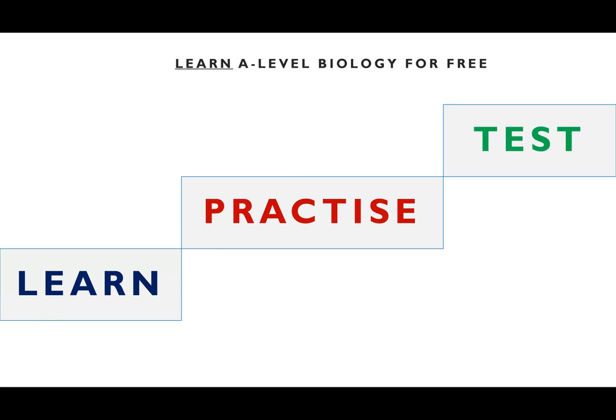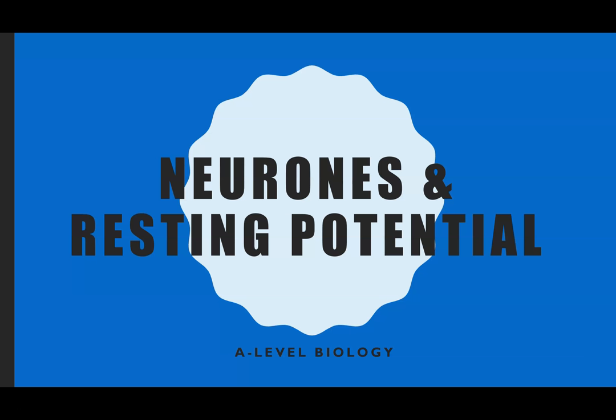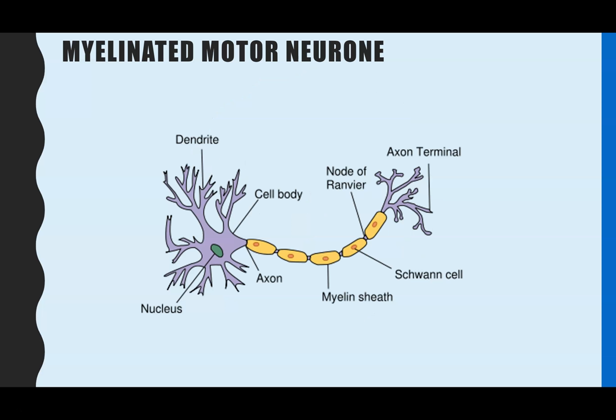Hi everyone, and welcome to Learn A-Level Biology for Free with Miss Esterick. In this video, I'm going to go through neurons and resting potential. First of all, the myelinated motor neuron — you need to know the structure of it to be able to recognize the features and label them, but also what the parts do.